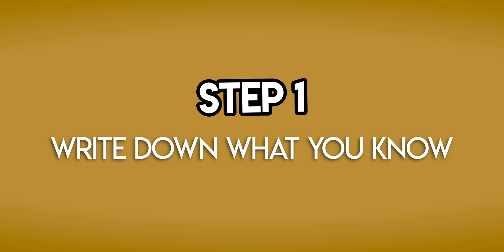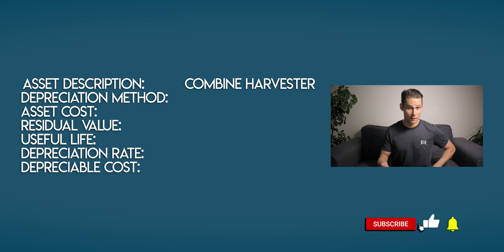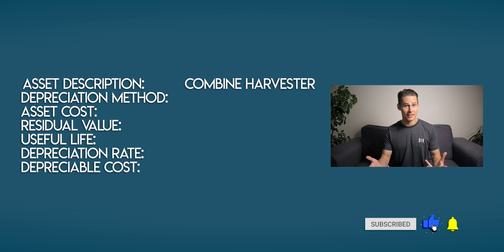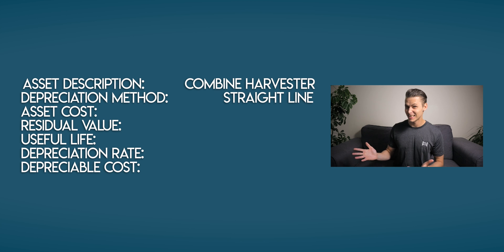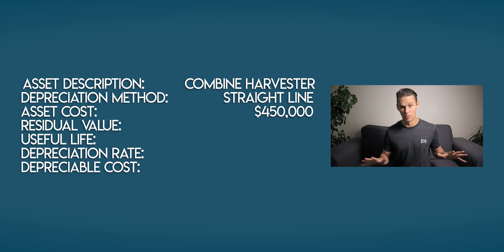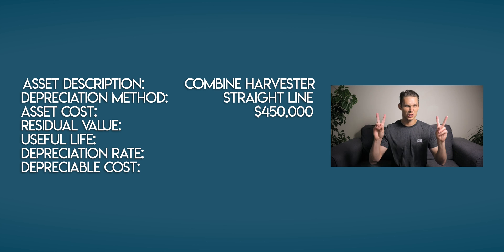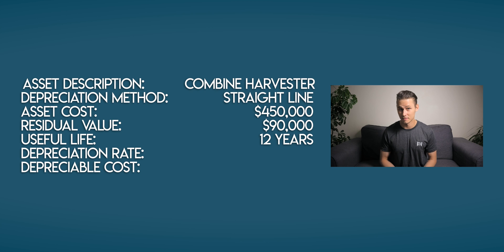Step one: write down what you know. You know that this asset is a combine harvester and that you're going to depreciate it using the straight line method. The asset cost is what you initially paid for it — $450,000, a lot of money. You estimate that its residual value, or salvage value, is $90,000 and that it has a useful life of about 12 years.